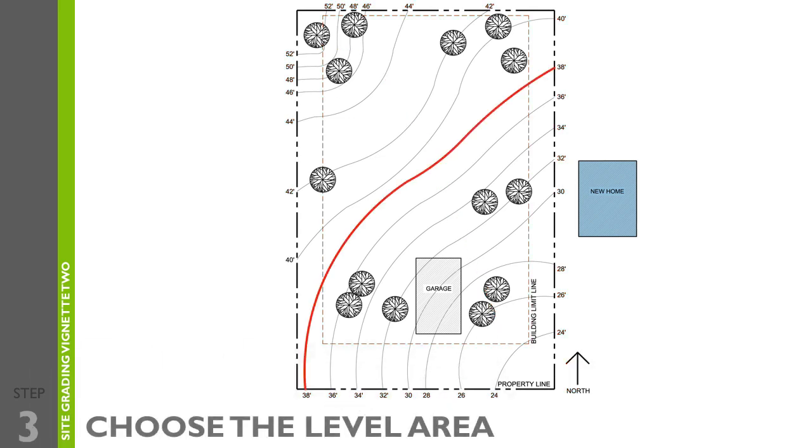In step number three, we're going to choose the level area. You can start by selecting a contour line for the location of the level area for the element that you are to place. Make sure it's away from any property lines, any elements that need to be protected, and steep sloping topography.